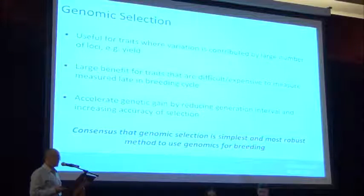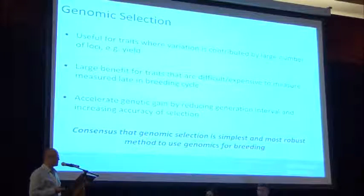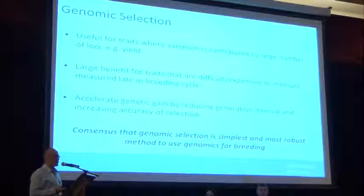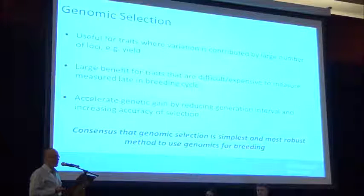In my view — and I think there's consensus — genomic selection is overall the simplest and most robust way to use genomics for breeding.